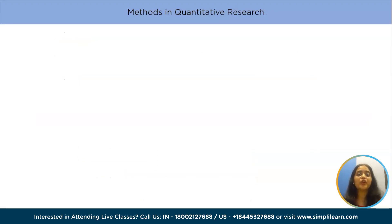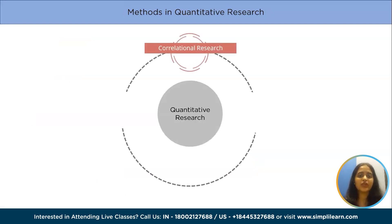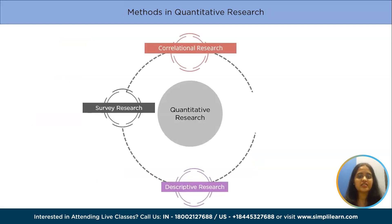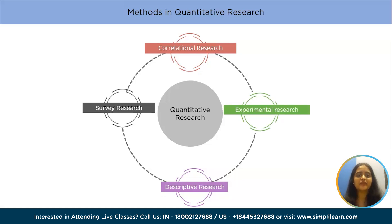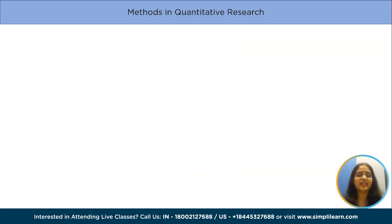Now come the important types of quantitative research. The first is correlational research, then survey research, descriptive research, and experimental research. Let us learn every one of them in detail.